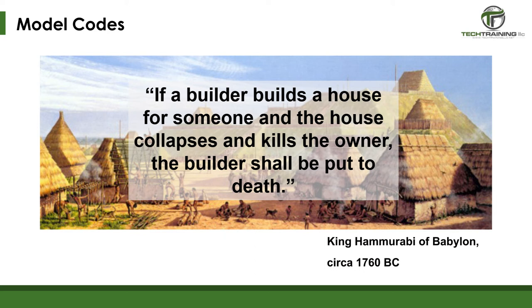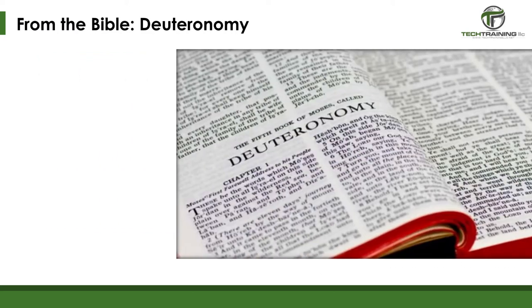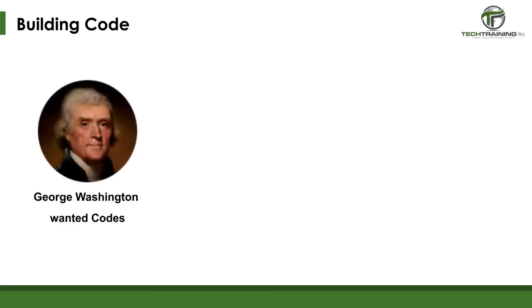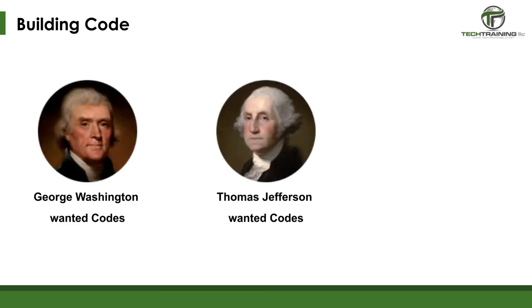Also in the Bible, Deuteronomy 22 states: 'In case you build a new house, you must also make a parapet for your roof that you may not place blood guilt upon your house because someone might fall from it.' In colonial America, both George Washington and Thomas Jefferson pushed for the development of building codes. Today, every state in the Union has some form of building codes. Almost all of these codes come from what is known as model codes.